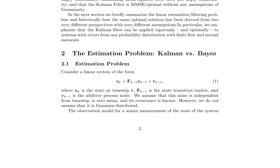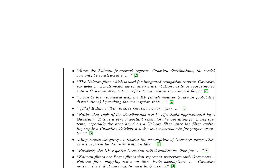In conclusion, the paper aims to clarify the misconception about the Kalman filter's requirement for Gaussian error and noise processes. It emphasizes that the Kalman filter is a versatile tool that can be applied rigorously and optimally to systems with errors from any probability distribution with finite first and second moments, making it a powerful tool for various engineering and scientific applications. The Kalman filter is a widely used optimal filter for estimating the state of a system based on measurements, with its optimality derived from the perspective of L2 norm error minimization via orthogonal projections.